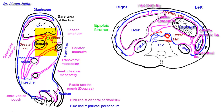In the free border of the lesser omentum there are three structures: a posterior structure which is large — the portal vein — and two anterior structures. One is the bile duct, located on the right side, drawn in green. The other is the hepatic artery, located on the left side, drawn in red. Both are located anterior to the portal vein. When you pass your finger into the epiploic foramen to enter the lesser sac, your finger is located between the inferior vena cava posteriorly and the portal vein anteriorly. Going superiorly you touch the liver; going inferiorly you touch the first part of the duodenum.